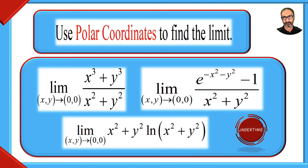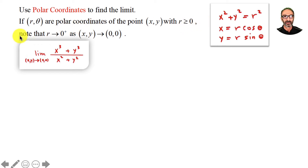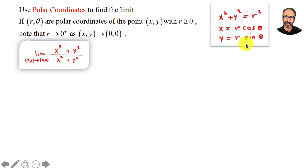Welcome to my channel Jabertang. I have three examples under the title 'Use polar coordinates to find the limit.' This is for vector calculus. If r and theta are the polar coordinates of the point xy, with r greater than or equal to zero — r is a length — we write r approaches zero from the right as x and y approach (0,0). Keep in mind that x²+y²=r², x=r·cosθ, and y=r·sinθ.